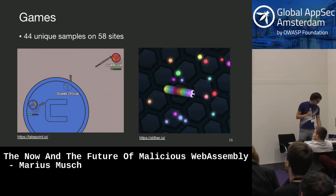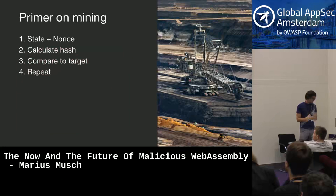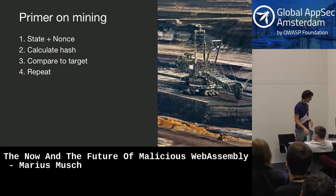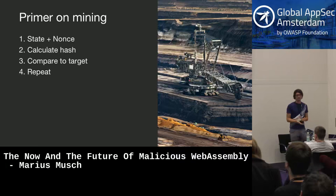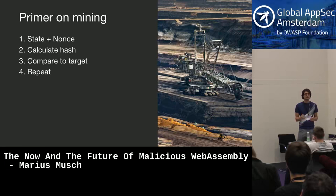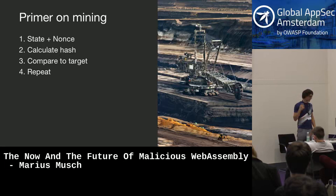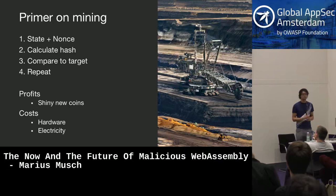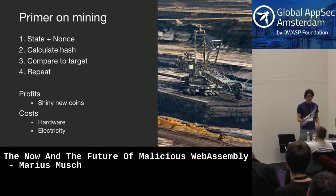But we also found some other stuff. I need to do a quick digression on crypto currencies and mining. Mining is the process of minting new coins — imagine something like Bitcoin. It works by taking the current state of the network, adding a random number of your choosing, calculating the SHA hash of all this, and comparing it to a given target. If you choose a random number that leads to a hash with lots of leading zeros, you've mined a block. It's just lots and lots of computation.